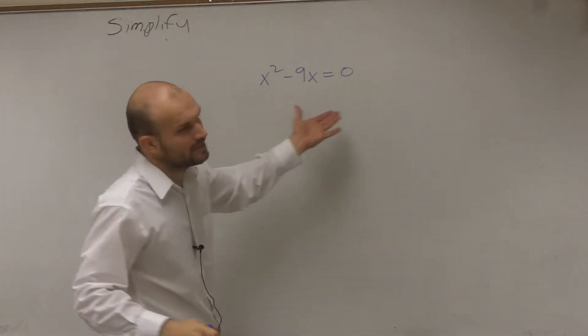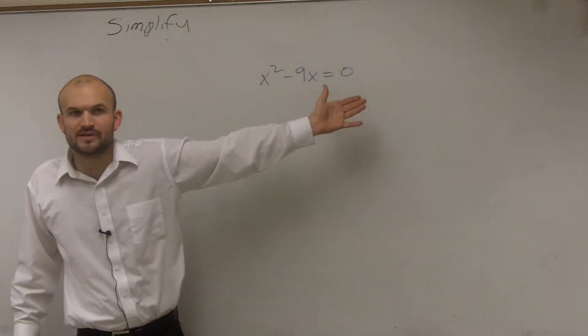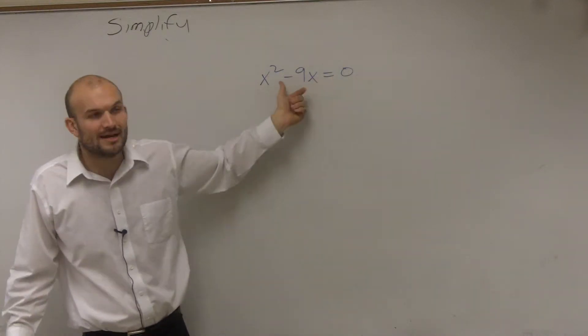We can't just square root both sides because we don't have our x isolated, right? We have two x's.